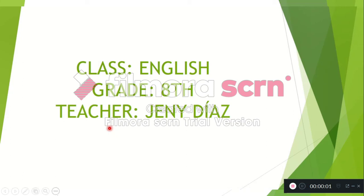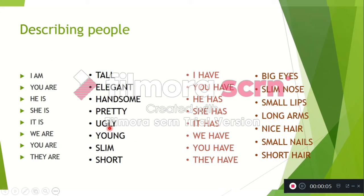Welcome to your English class grade 8 by teacher Jenny Diaz. First topic: describing people. In this case we are going to use two structures: the verb to be to describe physical appearance, and the verb have to describe the parts of our body.